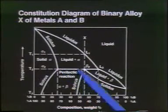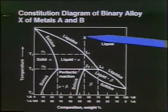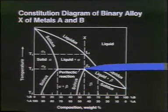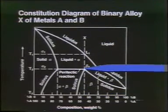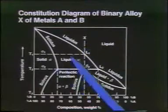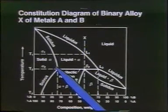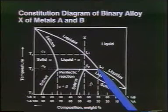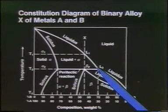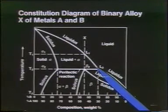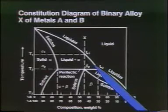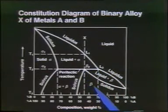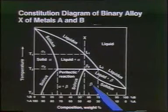When we get to this particular temperature, if we had a composition — alloy X right here — it goes right through the peritectic point. We would find in equilibrium a solid of that composition and a liquid of this composition coexisting together in this big pot of metal. But they react: the solid reacts with the liquid and it produces a different solid, which is beta, and it uses up all the liquid in doing that.